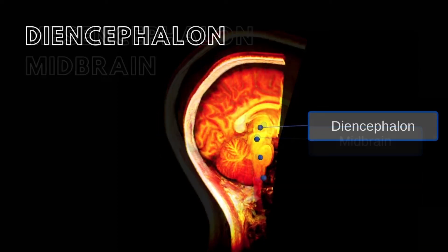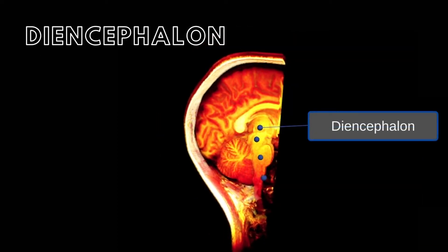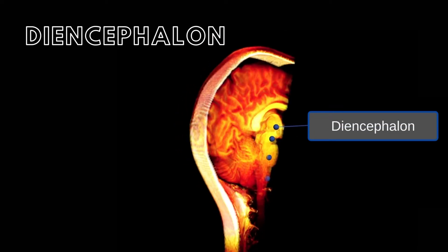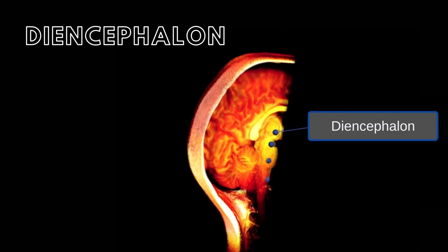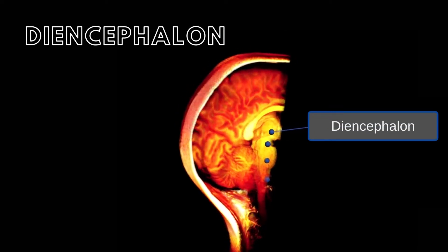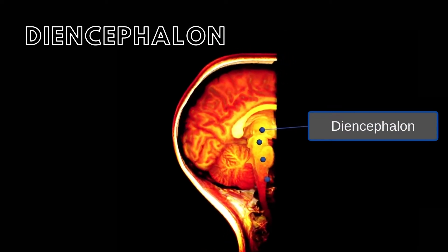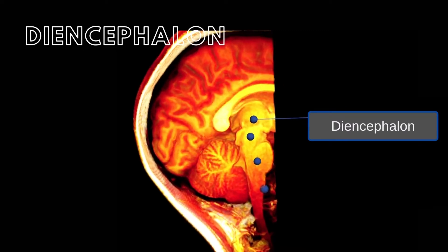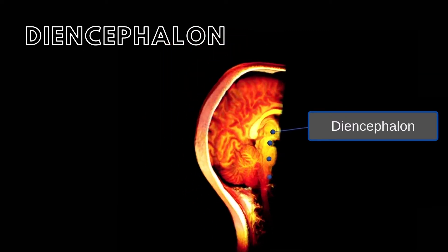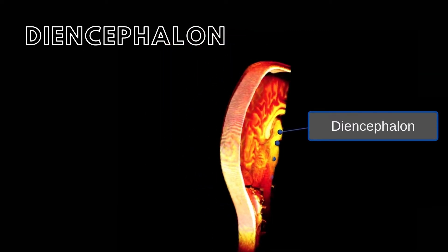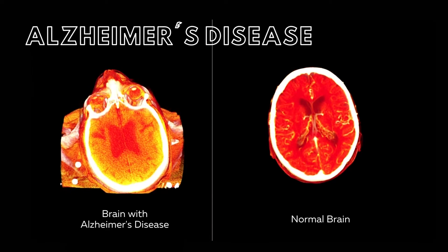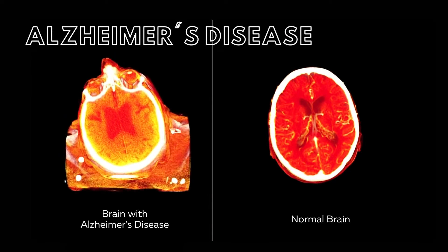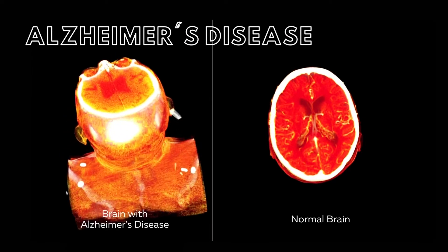The diencephalon is the most rostral portion of the brainstem and is composed of four parts: the epithalamus, thalamus, hypothalamus, and subthalamus. Now that we have looked at the brainstem, let's learn more about Alzheimer's disease.